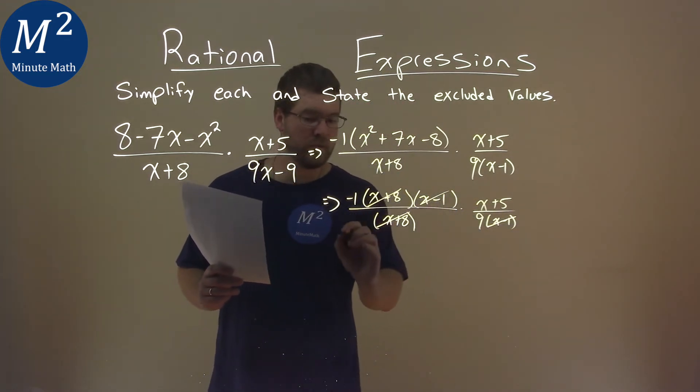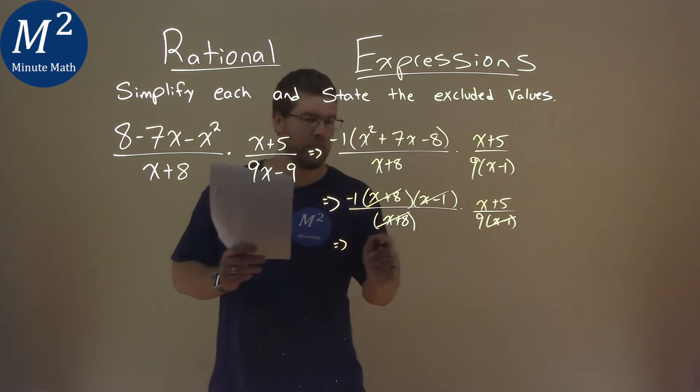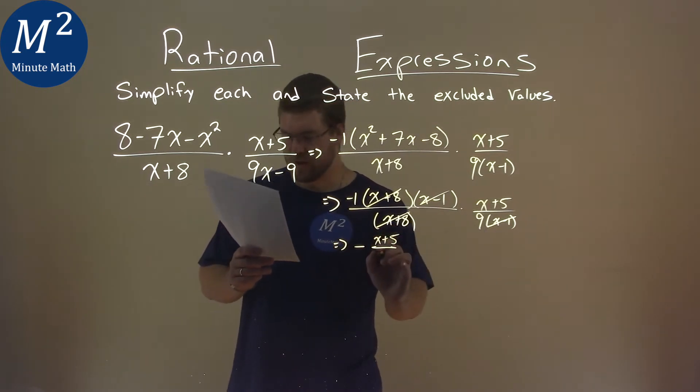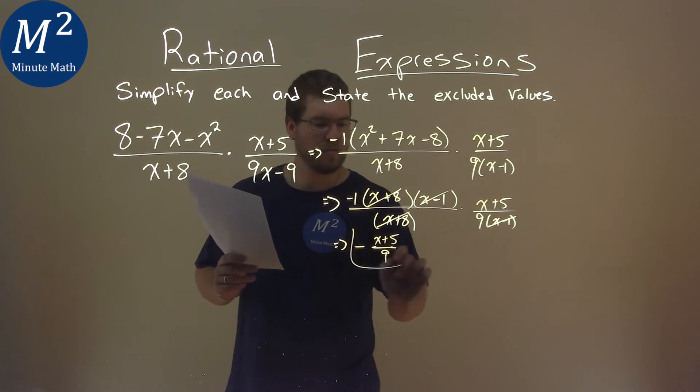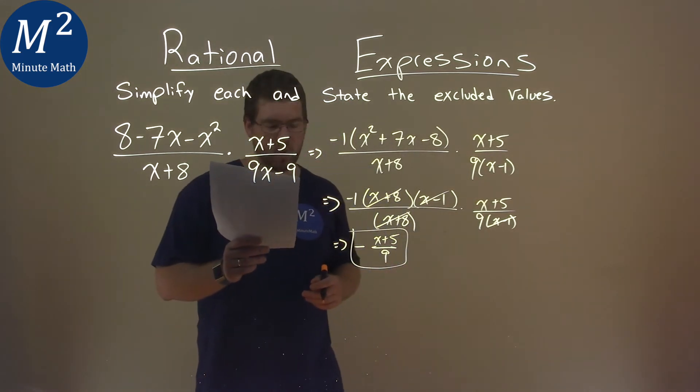And so we're left with, just in the numerator, that negative 1, or the negative on the outside, times we have the x plus 5 over just our 9. And so my simplified solution here is negative x plus 5 over 9.